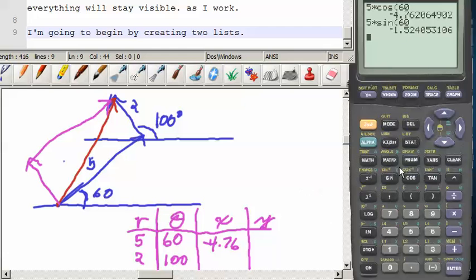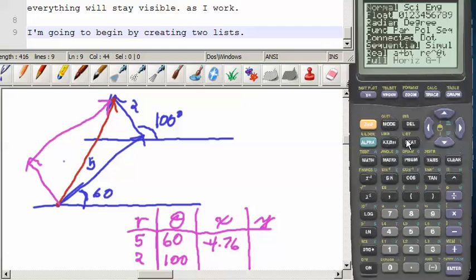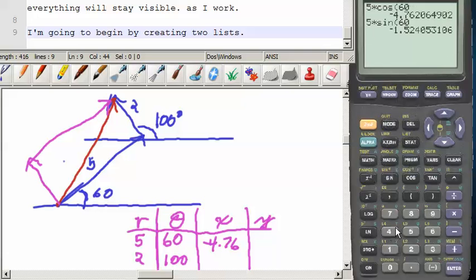However, I imagine I just made a mistake because yes, because this thing goes back to radians every time I start it. So I'm going to start over on that, second quit, and then cosine 60 turns out to be 2.5.